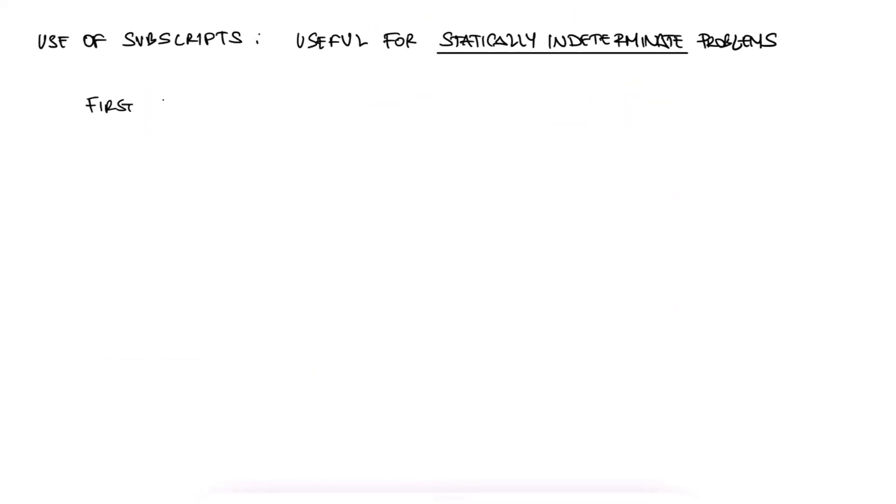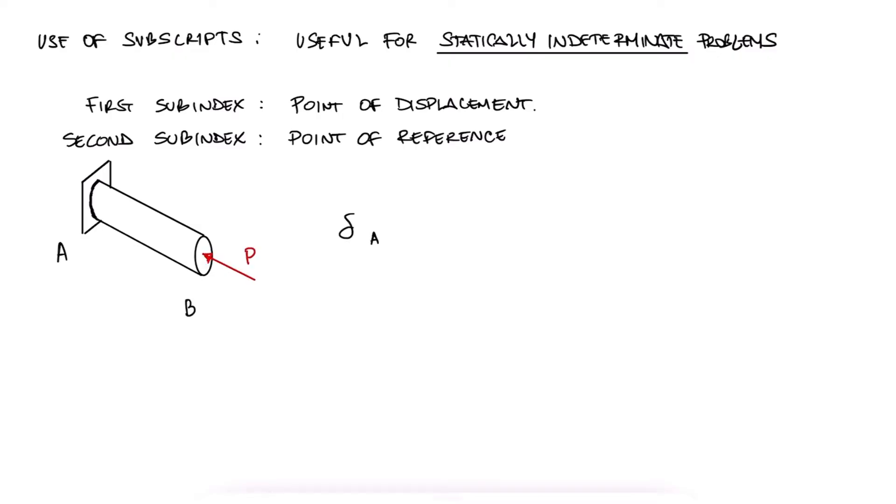The first subindex of delta refers to the point you're calculating the displacement of, and the second subindex refers to the point you are using as a point of reference. So, for example, for a cantilever rod AB that is being compressed against the wall, it makes sense to have the wall be the reference, and the actual moving side of the rod, the free end B, be the point you're calculating the displacement of. But you can also calculate the displacement of the wall with respect to the free end, and you'll see with this video's example and the example videos linked below how this is sometimes advantageous.